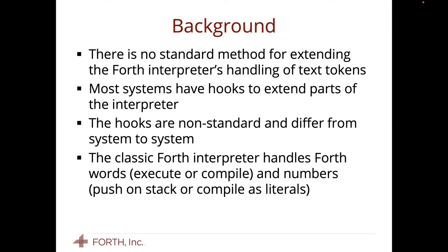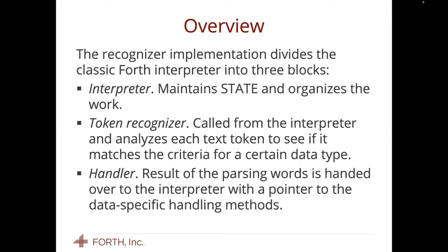So if you are trying to write a library or implement another system, there's no prescribed way to do this that behaves in a predictable way. The classic Forth interpreter handles Forth words — execute or compile — and numbers, pushing them on the stack as literals, with the obvious extensions: floating point, character literals, and things like that. The recognizer implementation takes the classic Forth interpreter and divides it up into chunks.